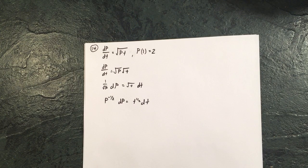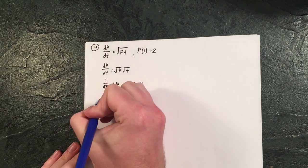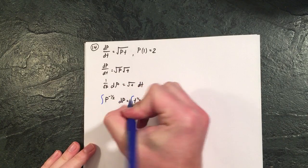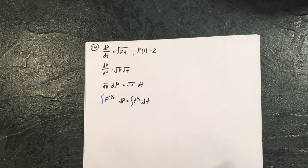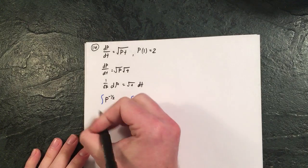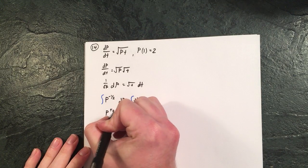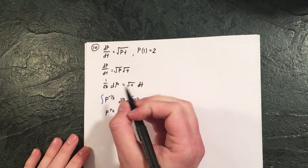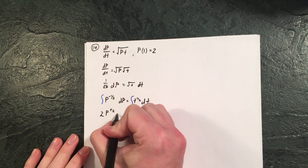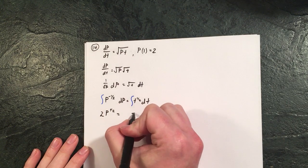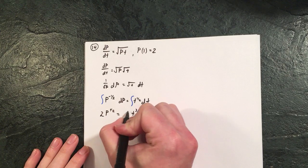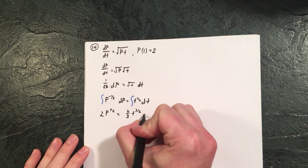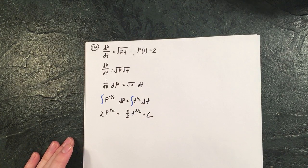At this point we can actually integrate both sides since we've successfully separated our variables. So this gets us p to the one half with a two that's going to pop out front, equals t to the three over two, and that means the two thirds is coming out front and we have that plus c.